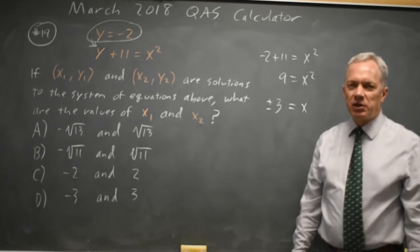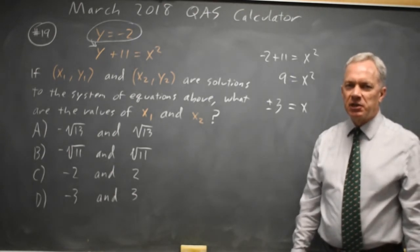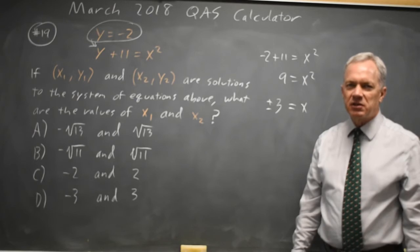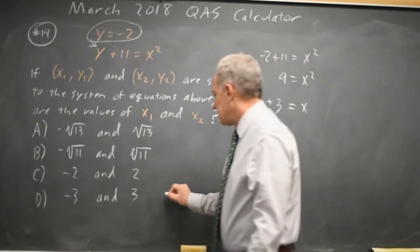Well, the square root of 9 is only positive 3. If you have x squared equals 9, the two solutions are positive and negative the square root. So that gives us choice D.